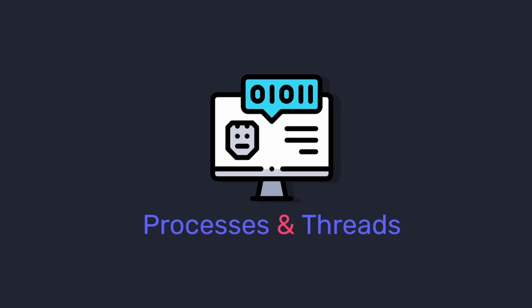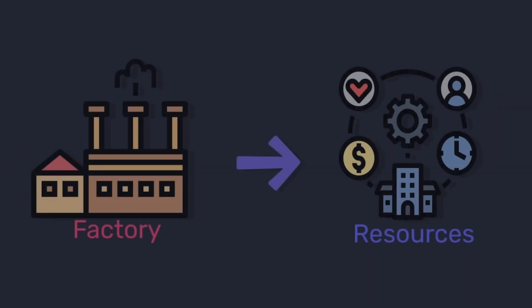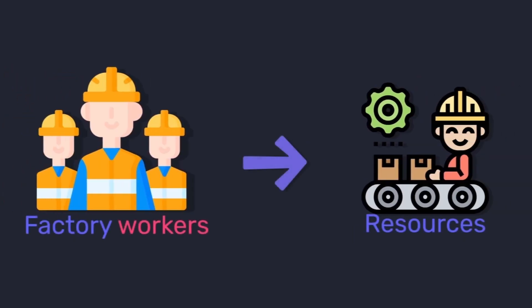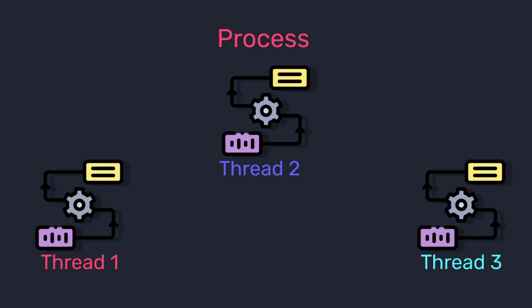In today's video we are going to look at what processes and threads actually are. Let's start using the analogy of a factory and factory workers. Just as the factory provides all the required resources, a process also provides all the resources which are required. Just as factory workers use those resources to produce a product, threads also use the resources provided by the process in order to produce an output.